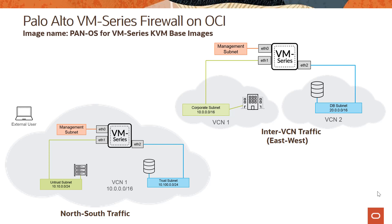With the VM-Series on OCI, you can secure inter-VCN traffic as well as north-south traffic. For inter-VCN traffic, the VM-Series firewall allows you to secure traffic moving within your cloud environment between VCNs — in this scenario you can configure an interface on the firewall connected to a subnet in each VCN. For north-south traffic, you can use the VM-Series firewall to secure traffic entering your cloud network from an untrusted source or exiting to reach an untrusted source. In this example, outbound traffic exiting the trust subnet in your VCN can be redirected to the firewall via a route table rule, where the firewall performs source address translation and applies any other security policy you have configured.